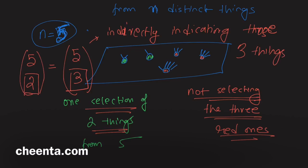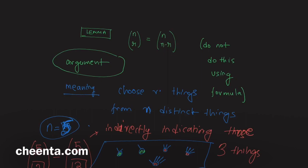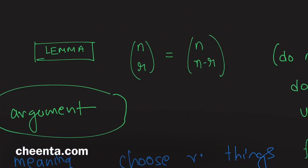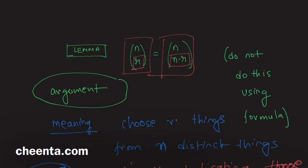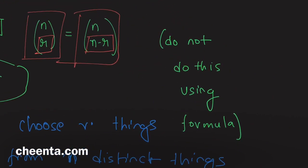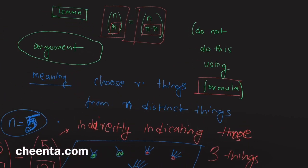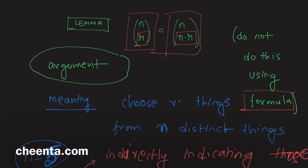This is the gist of the argument: whenever you are selecting r things, you are deselecting the remaining n minus r things, which makes you indirectly select or indicate them. That's why n choose r equals n choose (n minus r). In this case it's easier to use the formula, but I urge you to think about the argument — train your brain that way, it will be much more useful in the long run.